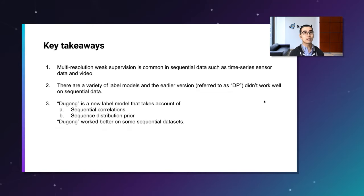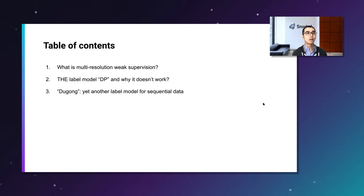So here are the key takeaways. Multi-resolution weak supervision is common in sequential data, such as time series sensor data and video, and there are a variety of label models. The earlier version, referred to as DP or data programming in the paper, didn't work well on sequential data. Dugong is the one that the paper proposed, a new label model that takes account of sequential correlations and sequential distribution prior. And Dugong worked better on some sequential data sets.